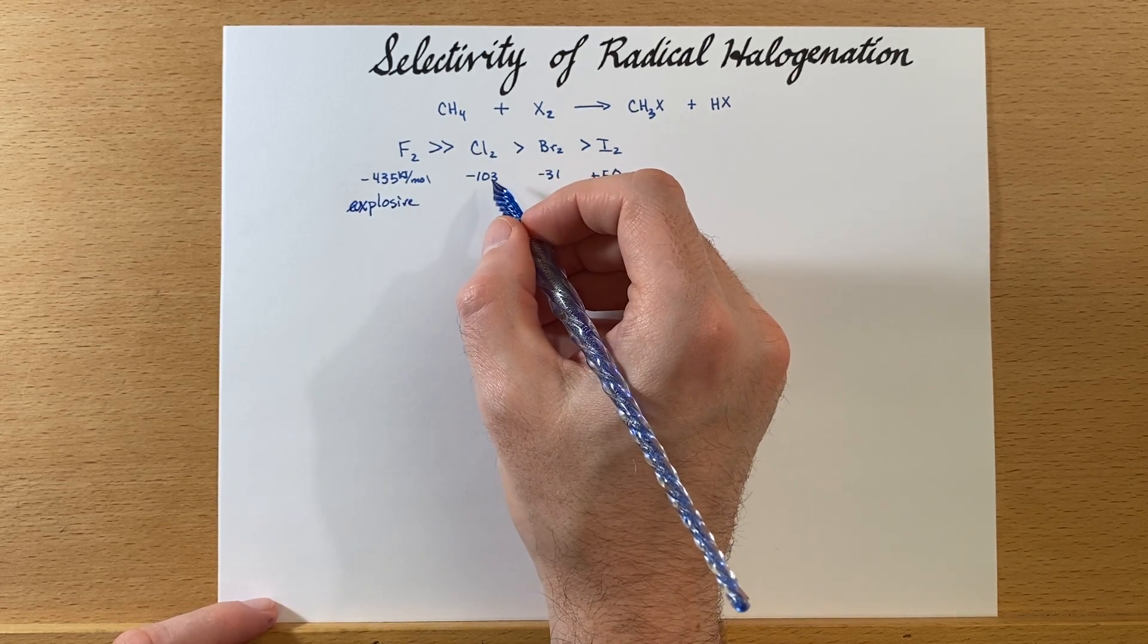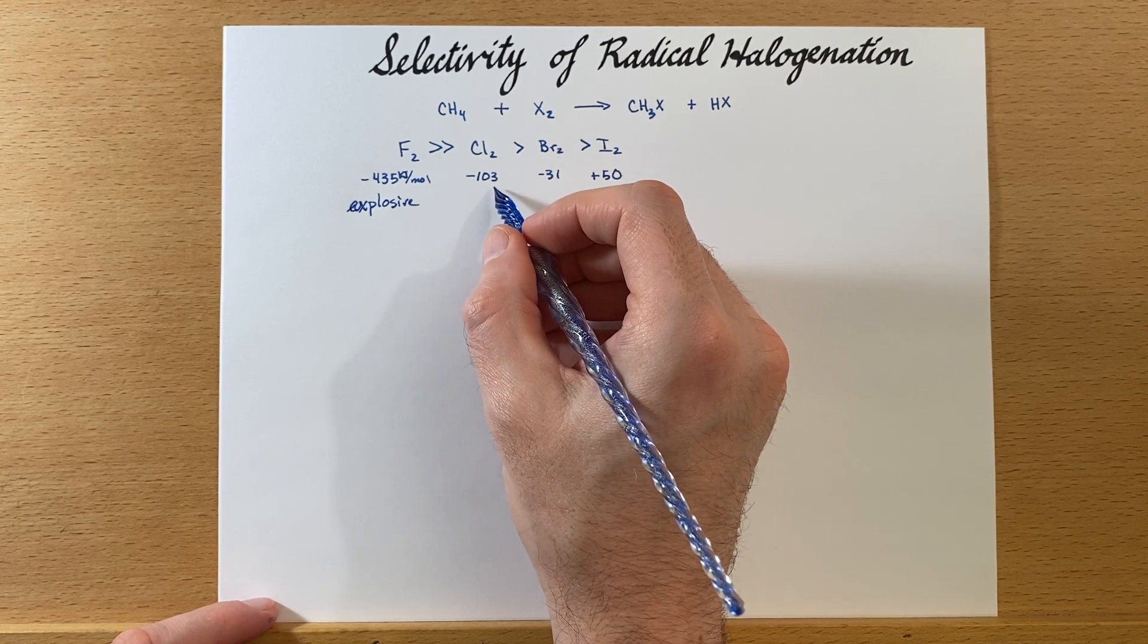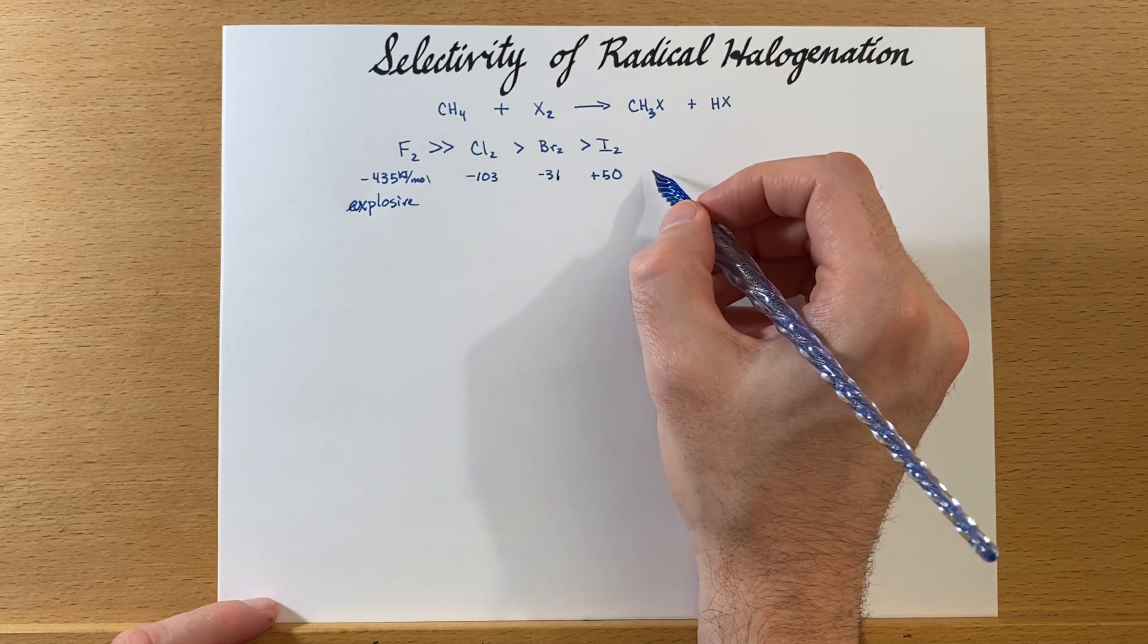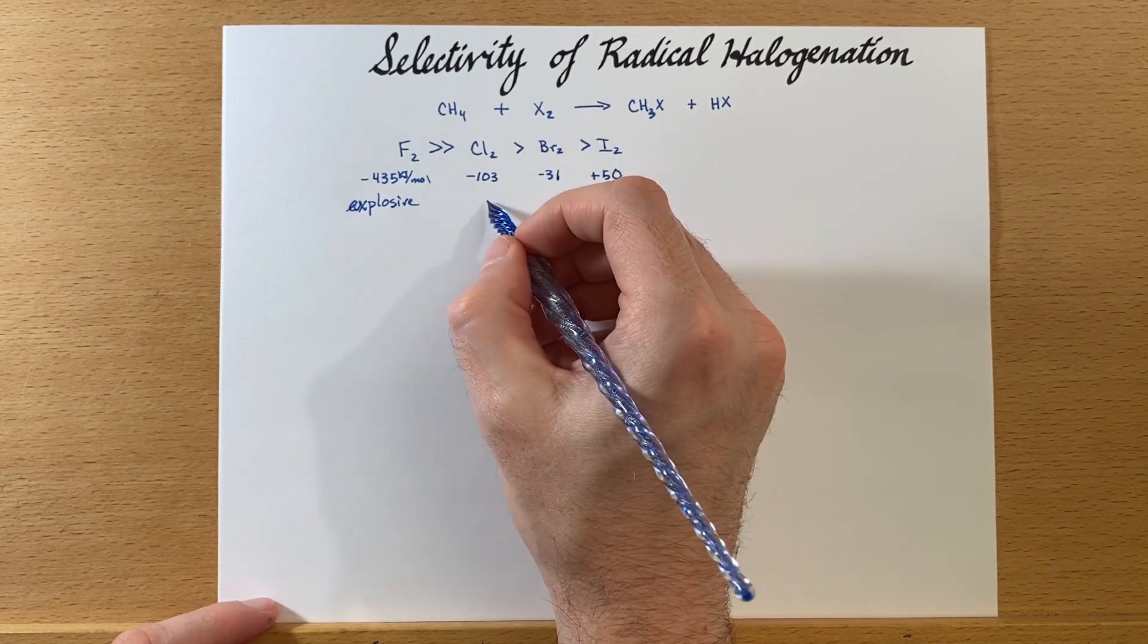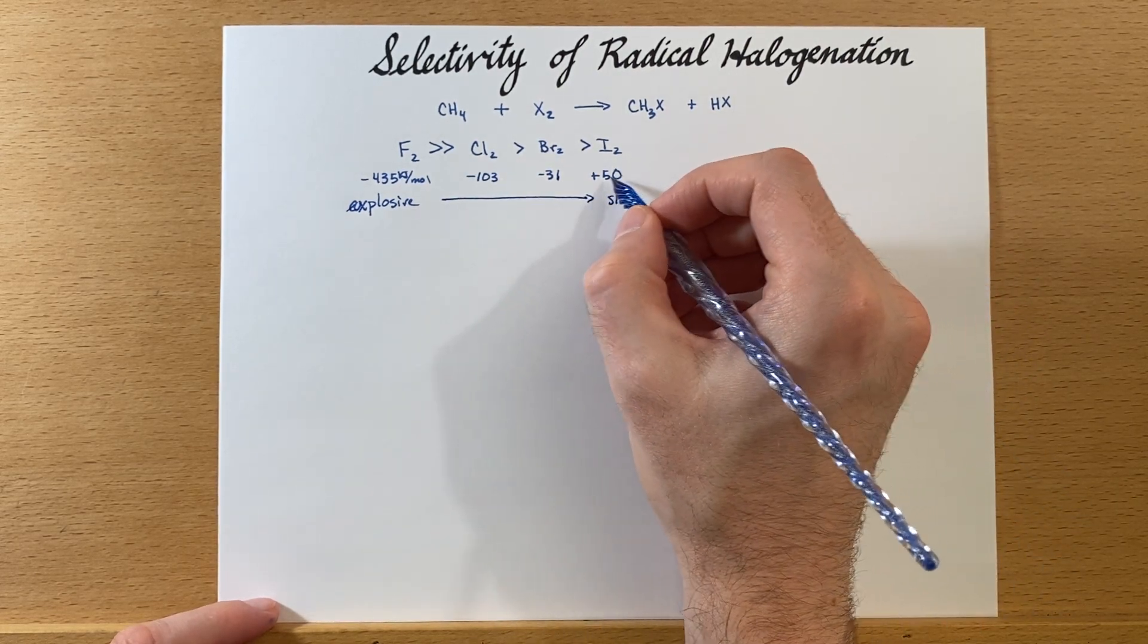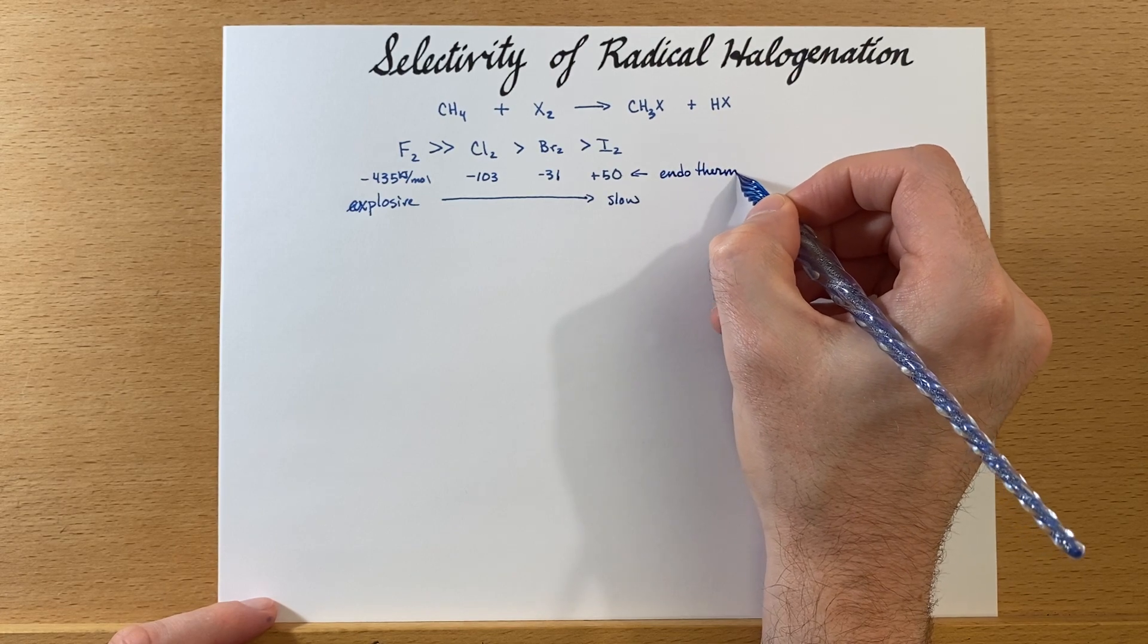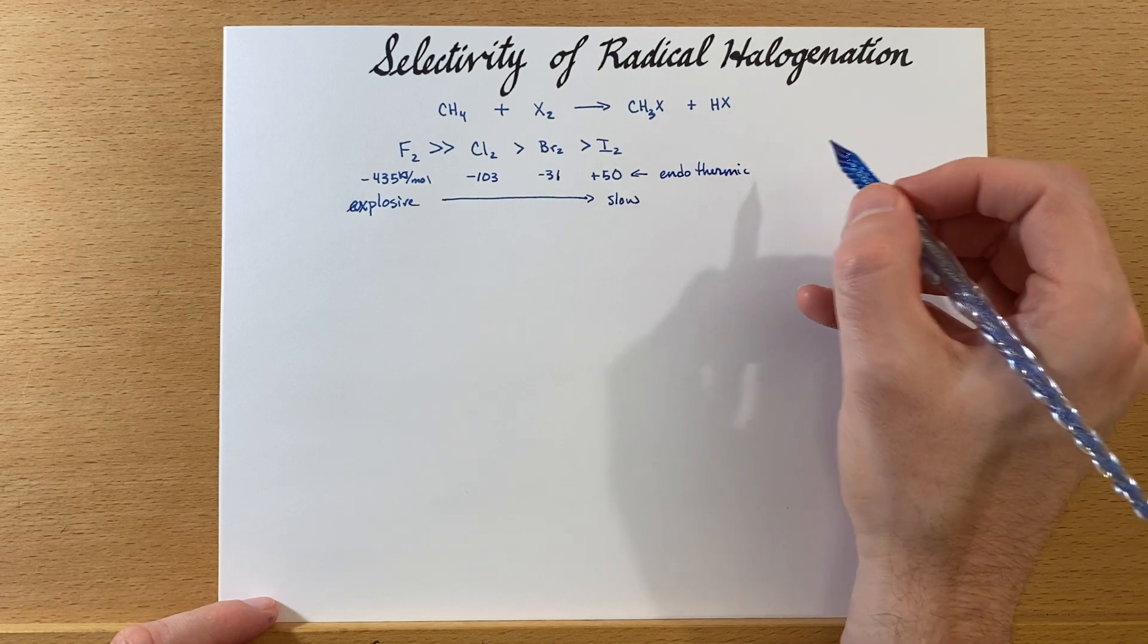Chlorine can still have quite a bit of reactivity. You'll notice that it's still very exothermic. Bromine becomes much milder. And then iodine, you kind of have to force it because it's endothermic. Because it's endothermic, we'll have to add heat if we have any prayer of the reaction happening in a reasonable amount of time.